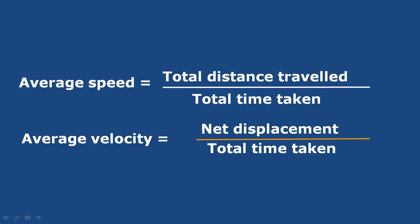Displacement is determined by the initial and final positions. In a straight line, displacement is the shortest distance between the initial and final positions.